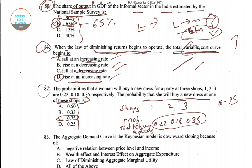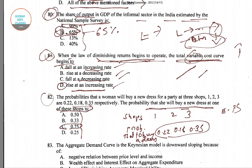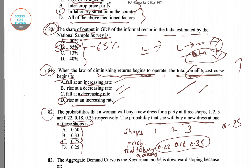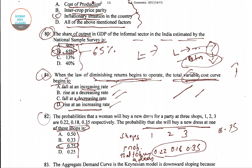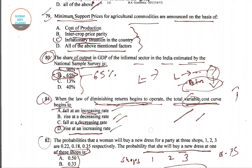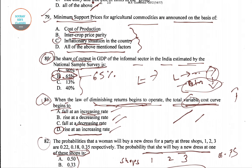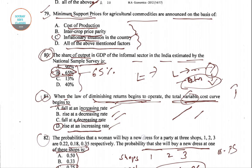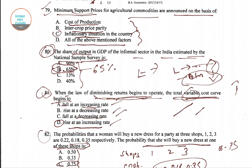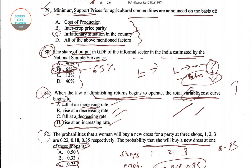So far we have answered four questions: question numbers 79, 80, 81, and 82. I want you to go through these questions once and grasp the idea before we proceed further with the other questions.